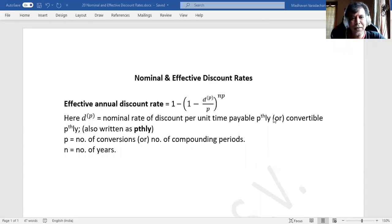In this video, we will understand nominal and effective discount rates. We want to find out the effective annual discount rate. We use this formula: 1 minus, within brackets, 1 minus dp divided by p, the whole thing to the power of np.